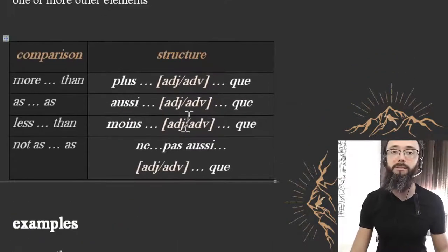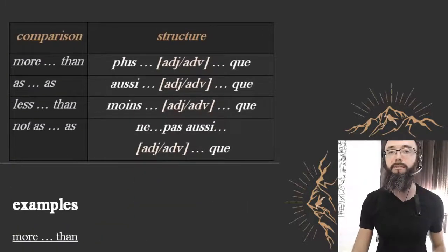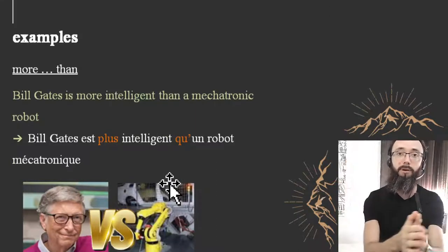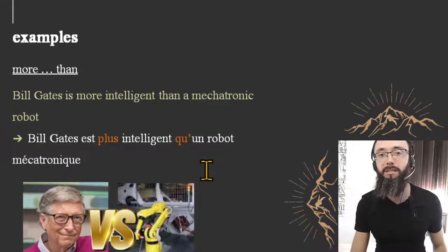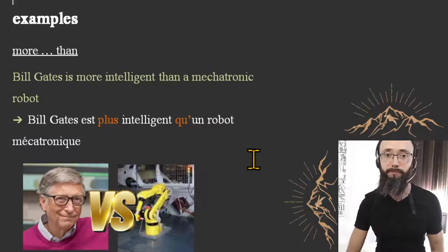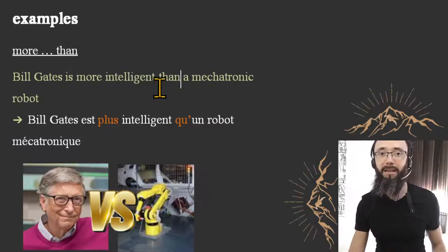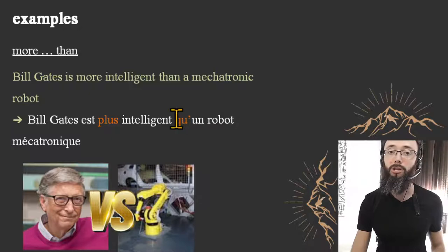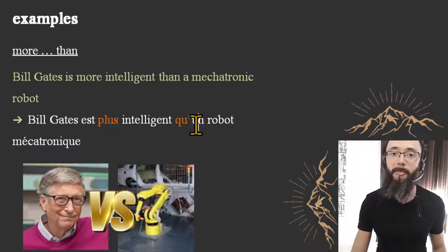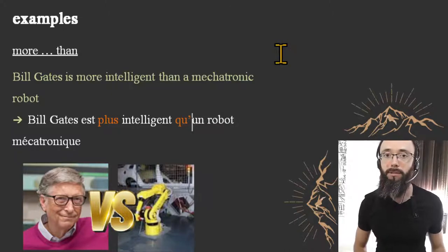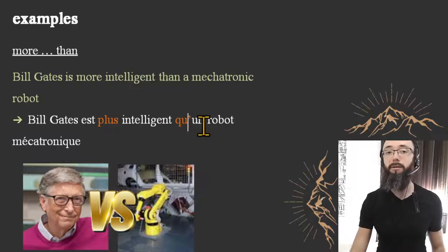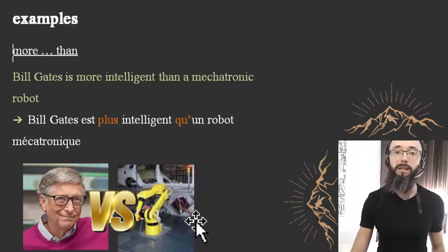'More than' example: Bill Gates is more intelligent than a mechatronic robot — 'plus intelligent que.' Note the contracted form: 'que' becomes 'qu'' with an apostrophe when followed by a vowel. So 'qu'un,' 'qu'il,' 'qu'ont' — that's how it works. 'Bill Gates est plus intelligent qu'un robot méchatronique.'